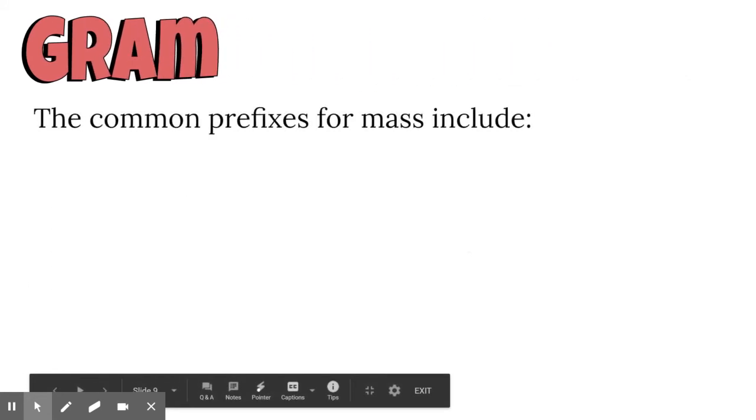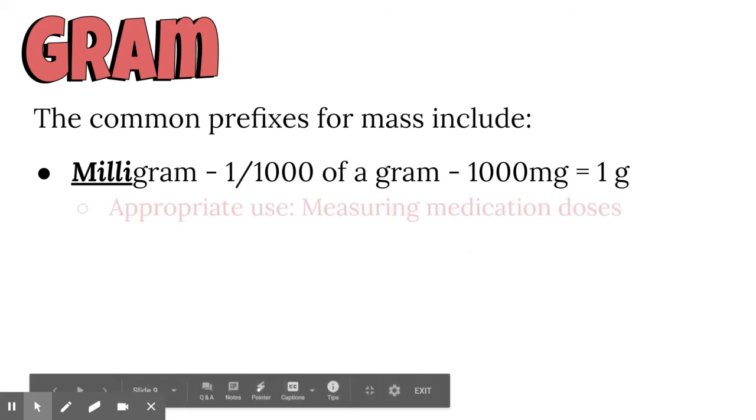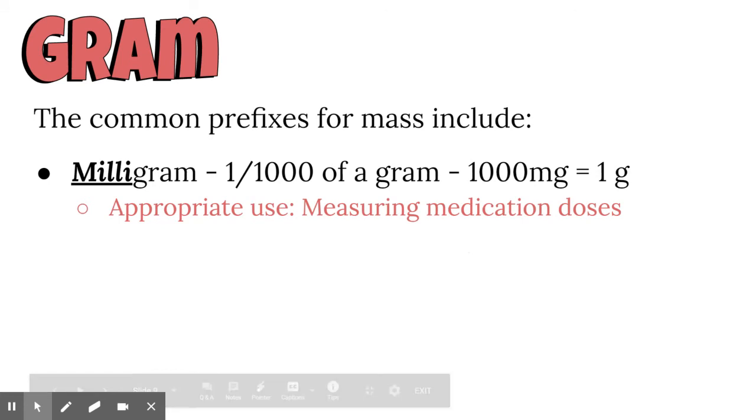The common prefixes for mass: milligram is one one-thousandth of a gram. There's a thousand milligrams in each gram. It's really appropriate when we're using things like medication. If you're taking Tylenol, you can find Tylenol with 200 milligrams of acetaminophen, or extra strength ones with 400 or 800 milligrams. It's appropriate for measuring things like that.